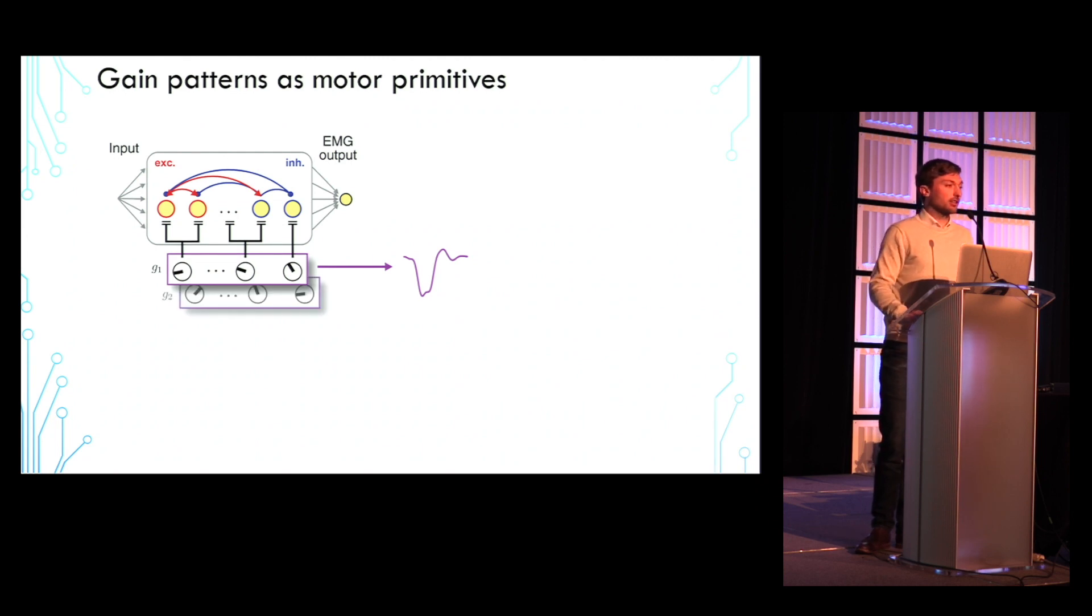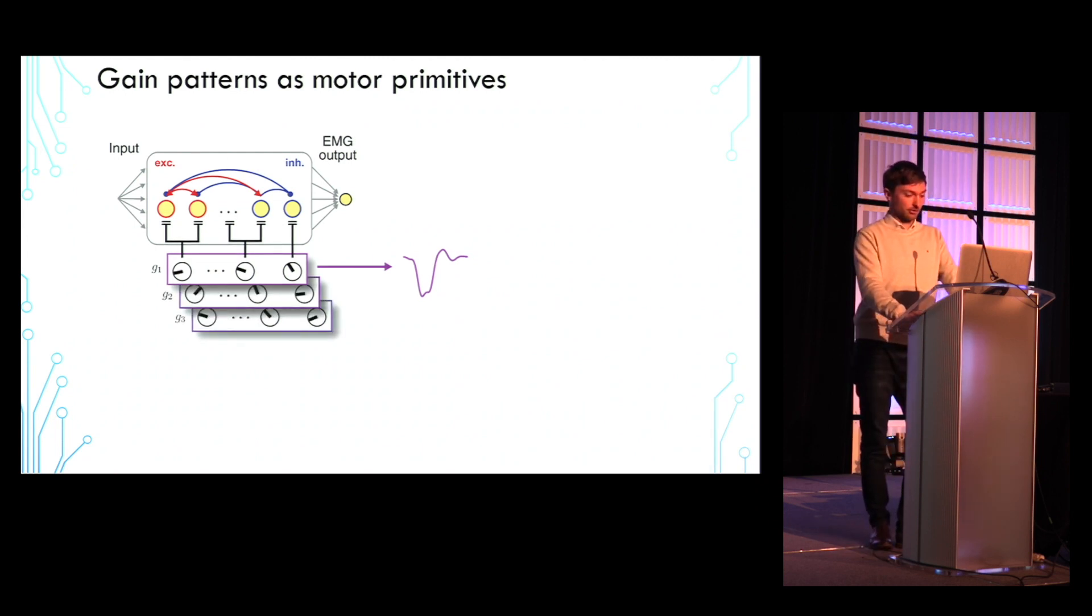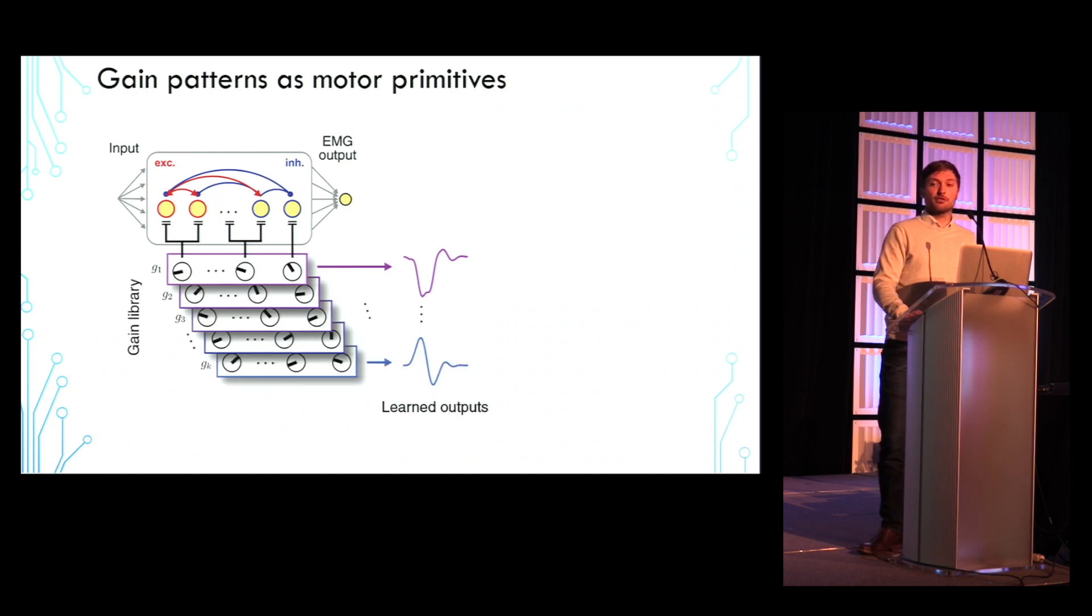Supporting the possibility of a library of modulation states that the network can switch between to generate a large variety of outputs.